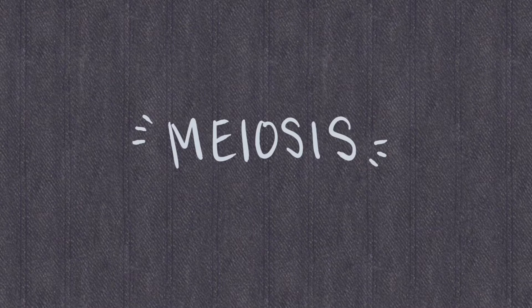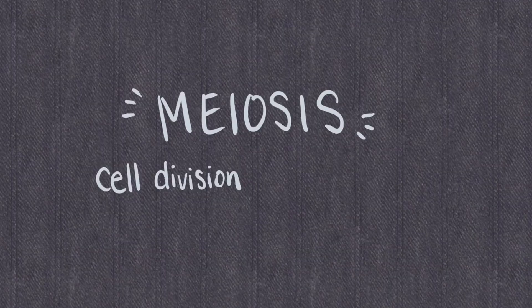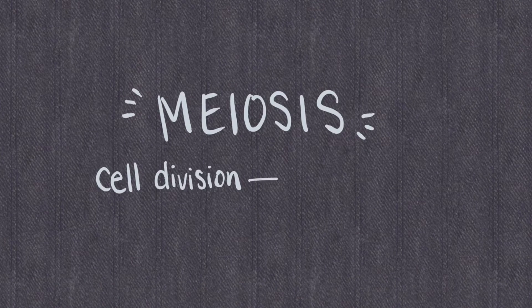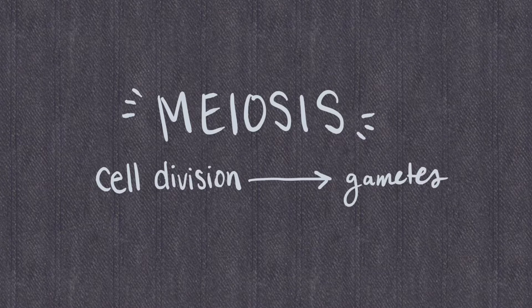But first let's talk about what meiosis is and why meiosis is so important in the first place. So meiosis is the cell division, and it's cell division that results in the production of gametes, such as egg or sperm cells.